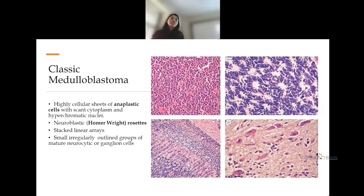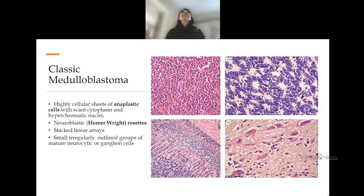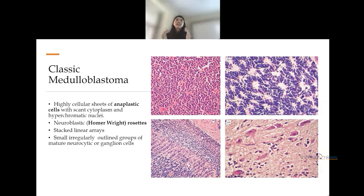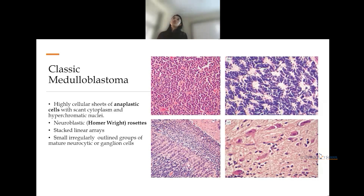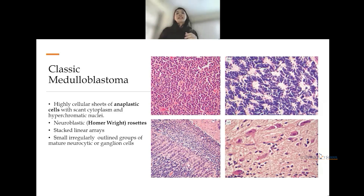Moving to histological subtypes: the first is the classical type. Under the microscope it appears as highly cellular sheets of small round blue cells with anaplastic and mitotic figures, densely packed almost like a syncytium. Homer-Wright rosettes — small circular tumor cells around the neuropil — are seen. There are also stacked linear arrays of tumor cells in the molecular layer of cerebellum, called the spongioblastic pattern. Small irregularly outlined groups of mature neurocytic and ganglion cells are also present.